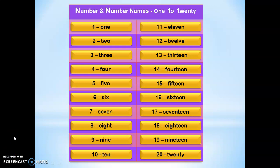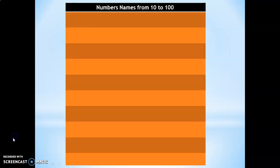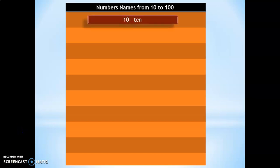Once this is done, next, children should be made to be thorough with the spelling of numbers by counting in tens from 10 to 100. These spellings are new to the children and once they are thorough with these spellings, they will be able to write the number names of all the other numbers from 1 to 100 easily.